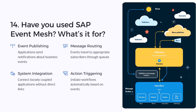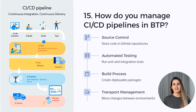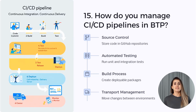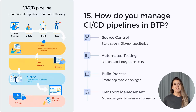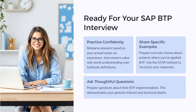Question fifteen: How do you manage CI/CD pipelines in BTP? I usually set up CI/CD using GitHub Actions or Jenkins. For transport, I use SAP's Transport Management Service. This allows us to push changes across environments in a controlled, automated manner. And that wraps up the top 15 SAP BTP interview questions.